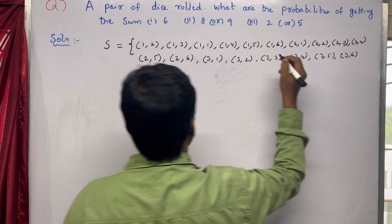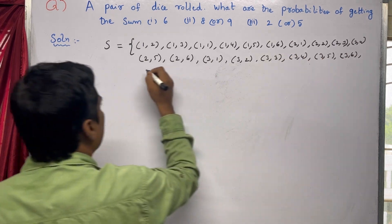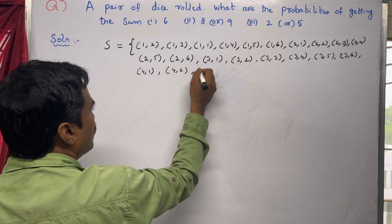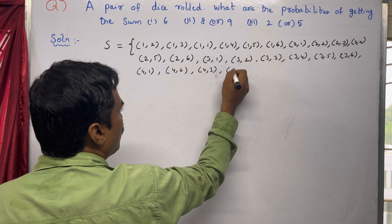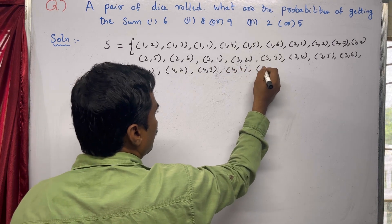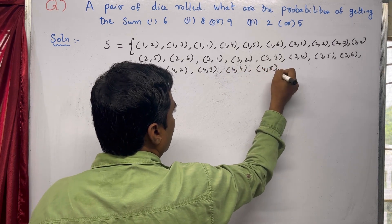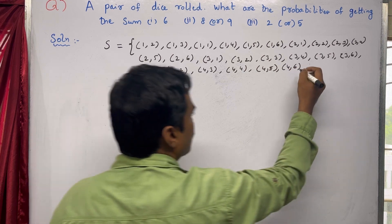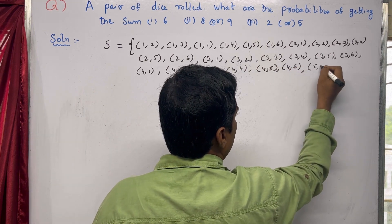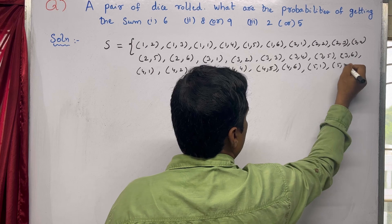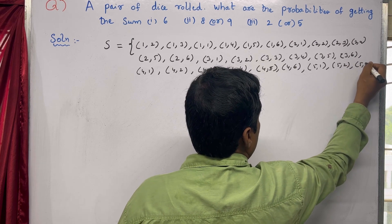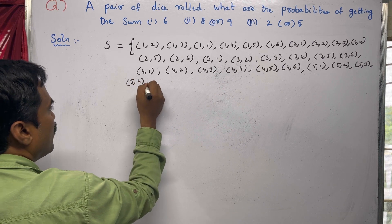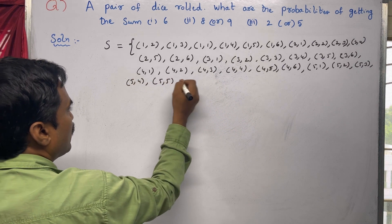Then (4,1), (4,2), (4,3), (4,4), (4,5), (4,6), then we start with 5 so we get (5,1), (5,2), (5,3), (5,4), (5,5).